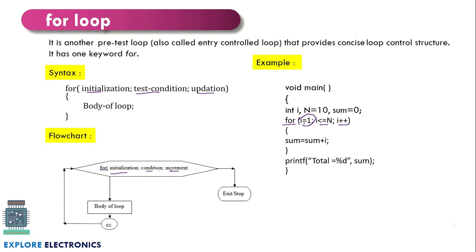In the first iteration, i is initialized to 1 and since 1 is less than 10, it enters the loop. Sum is 0 and it will be added with i value that is 1. Then i is incremented to 2, which is again less than 10, so sum is added with 2. Likewise it will be executed till i becomes 10, satisfying the less-than-or-equal-to condition and executing the 10th time. After 10, i is incremented to 11. Since 11 is not less than or equal to n, it comes out of the loop and executes the print statement.